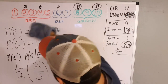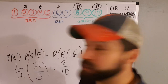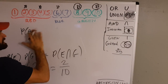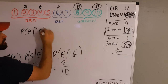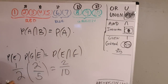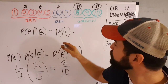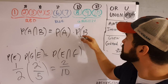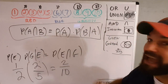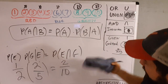So here's how we write the general multiplication rule using A's and B's: the probability of A and B equals the probability of A times the probability of B given A. That always works.